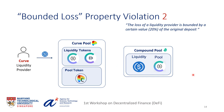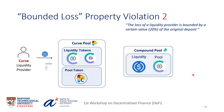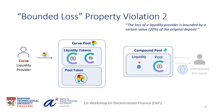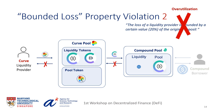This property can also be violated due to over-utilization in the Compound pool, showing the potential negative effects of composability. The Curve liquidity provider deposits USDC and receives pool tokens. However, if a borrower depletes the Compound pool of all USDC by loaning and not repaying, the Curve pool cannot retrieve the tokens from Compound when the liquidity provider tries to redeem. Therefore, the liquidity provider will not receive any of his original deposit and the property is violated.